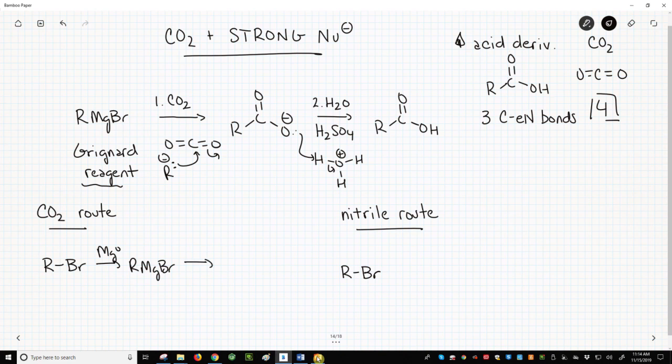Then we can add CO2 followed by water and acid that could be HCl, sulfuric acid – doesn't matter which – to get the acid. We've extended the halide by one carbon and made an acid.